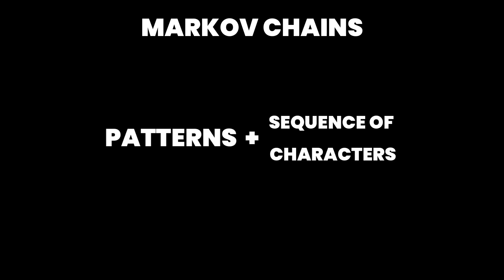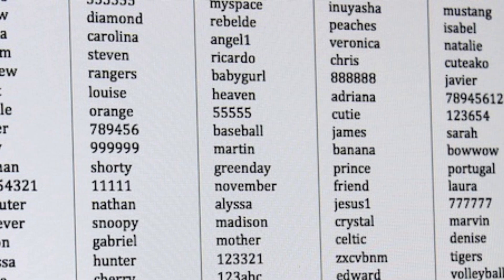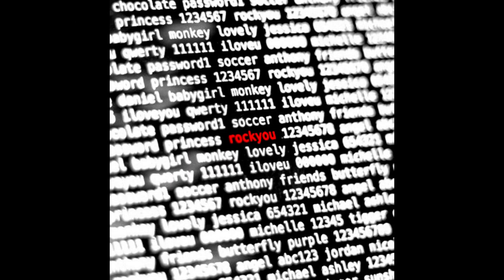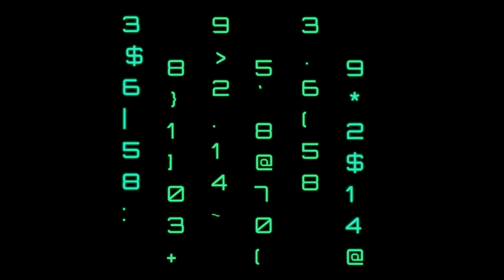There is one more technique similar to this called Markov chains. With a Markov chain, you are still using patterns, but it is more about the sequence of characters. It looks at the probability of each character appearing after the previous one based on observed passwords. For example, if T often comes after A in passwords, the Markov chain will take that into account when guessing. It is like predicting the next character in a password based on what came before. Both PCFG and Markov chains are used to create word lists with the highest chances of cracking success.